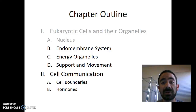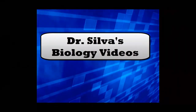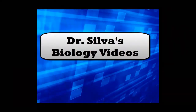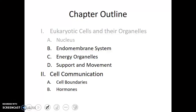Next on our tour of the eukaryotic cell is the endomembrane system. Now that we've learned about the administrative office, let's look at where stuff is made and how it's transported. We're going to look at the endomembrane system.